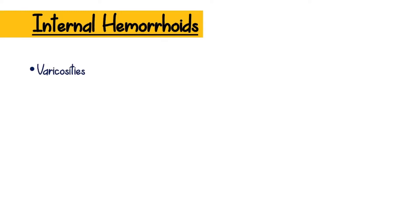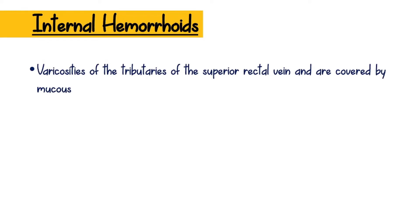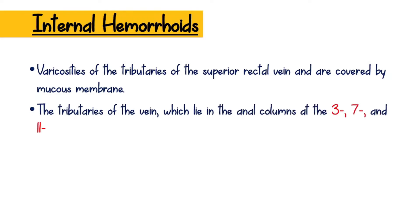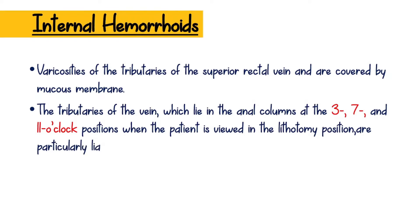Internal hemorrhoids are varicosities of the tributaries of the superior rectal vein and are covered by mucous membrane. The tributaries of the vein lie in the anal columns at the 3, 7, and 11 o'clock positions when the patient is viewed in the lithotomy position, and are particularly liable to become varicosed.